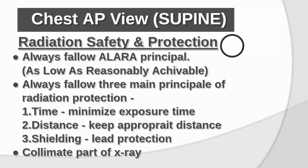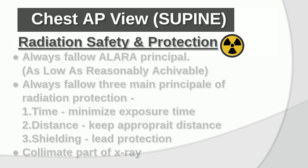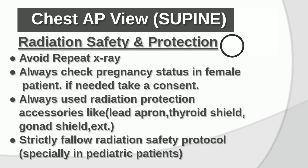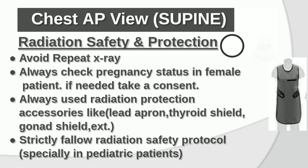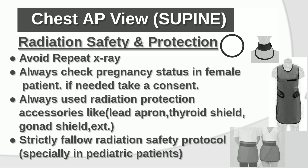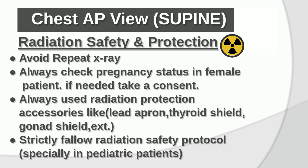Minimize exposure time. Keep appropriate distance. Always use lead protection. Collimate the X-ray beam. Avoid repeat X-rays. Always check pregnancy status in female patients. If needed, take consent. Always use radiation protection accessories like lead apron, thyroid shield, gonad shield, etc. Strictly follow radiation safety protocol, especially in pediatric patients.